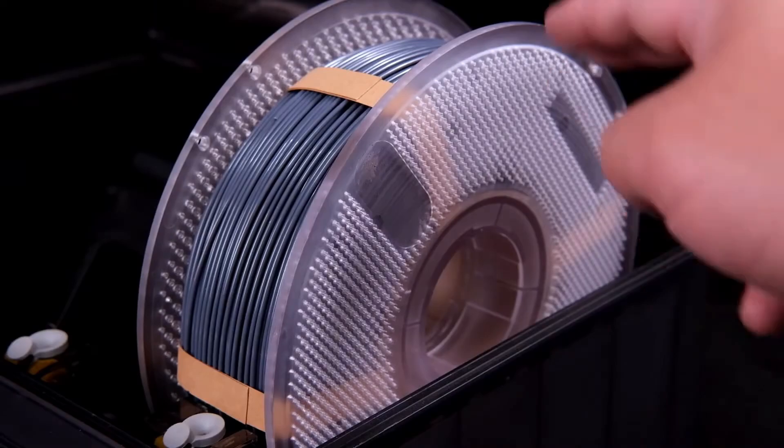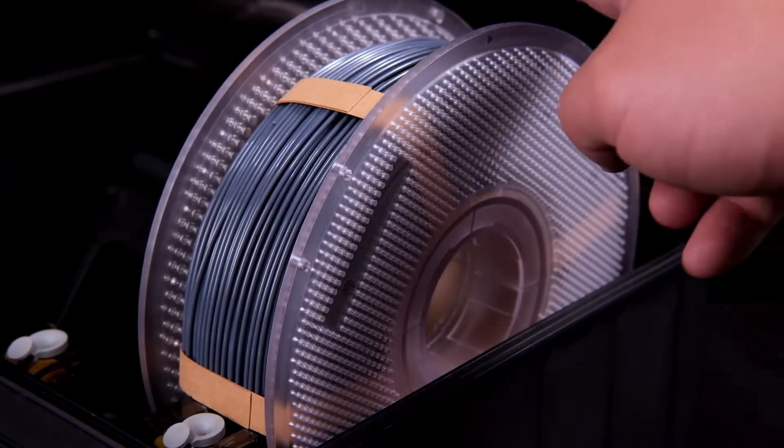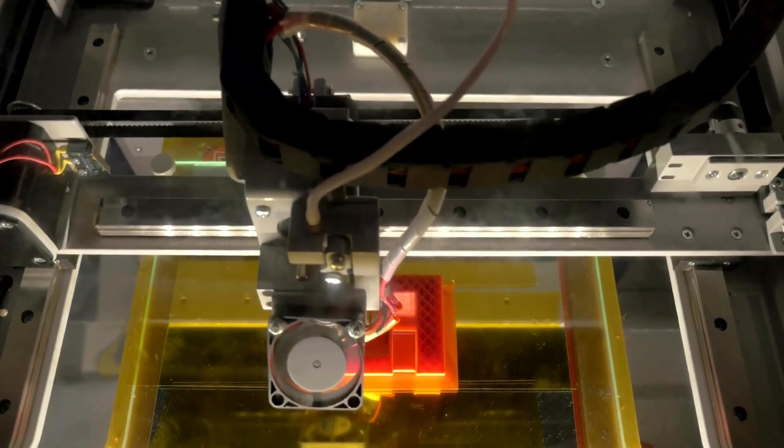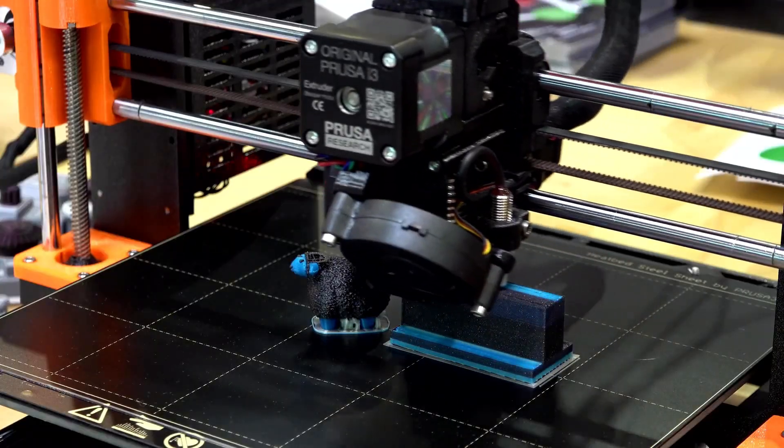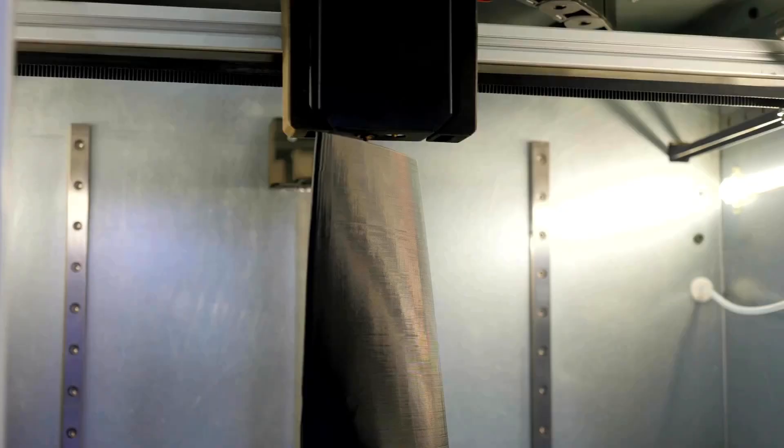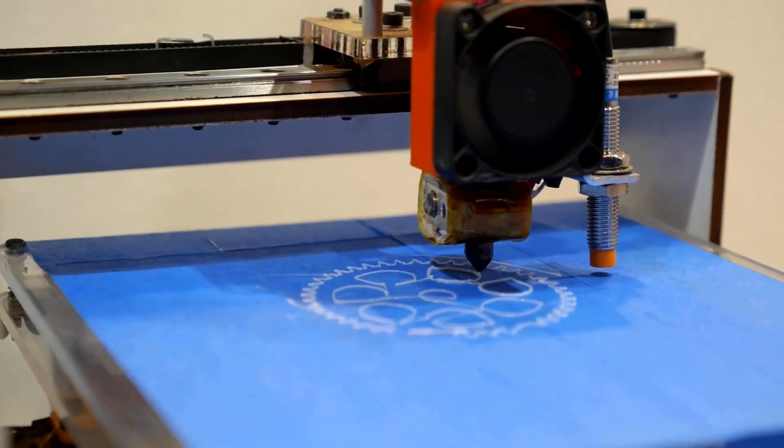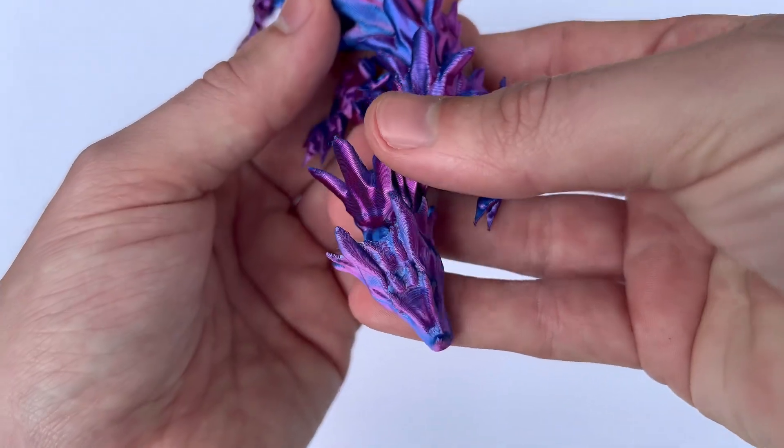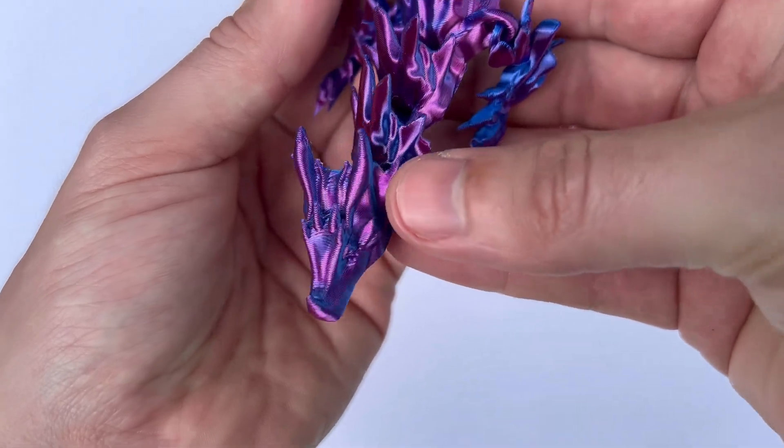PETG is tougher and more flexible, providing better impact resistance. It is ideal for parts that need to flex or absorb shock, such as clips, springs, or outdoor items. PETG is a product that's going to flex instead of crack under pressure, making it more durable for functional parts.